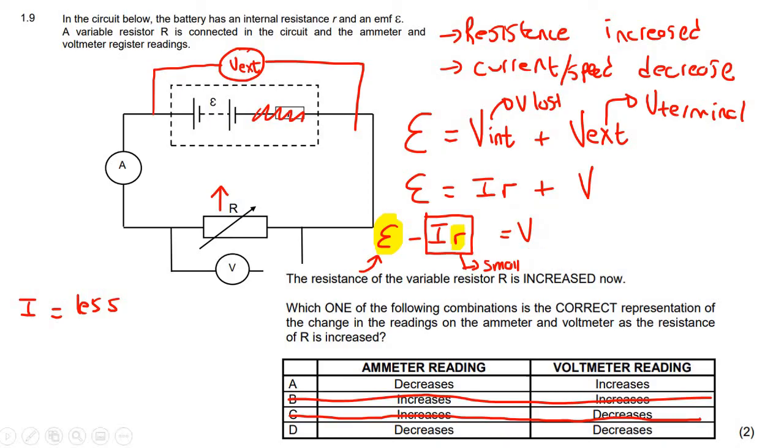Well, it's going to end up becoming a larger number than what it was originally. So this voltmeter reading is actually going to increase. So we're looking for the voltmeter reading that increases. And so the answer for this one would be A.